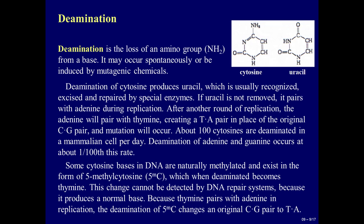Deamination of adenine and guanine occurs at about one-hundredth this rate. Some cytosine bases in DNA are naturally methylated and exist in the form of 5-methylcytosine, which, when deaminated, becomes thymine. This change cannot be detected by DNA repair systems because it produces a normal base, thymine. Because thymine pairs with adenine in replication, the deamination of 5-methylcytosine changes an original CG pair to TA.